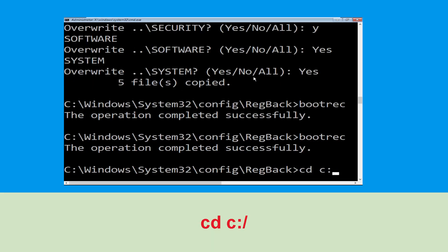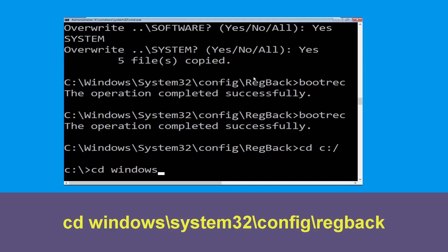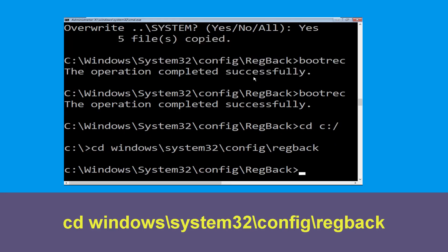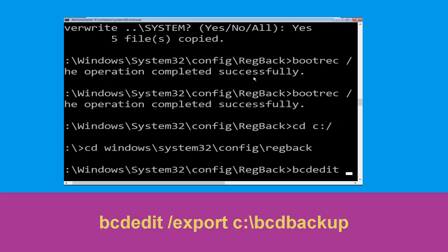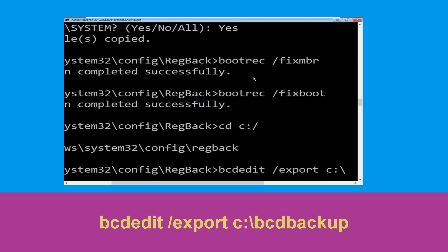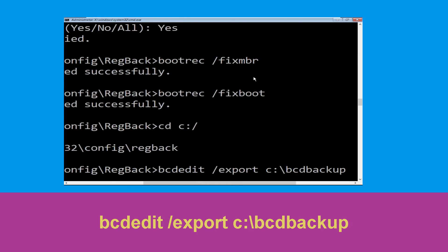Type cd C:\ and simply hit Enter to execute the command. Then navigate to cd windows\system32\config\RegBack and simply hit Enter to execute the command. Now execute this command: type bcdedit /export C:\bcd_backup and simply hit Enter.